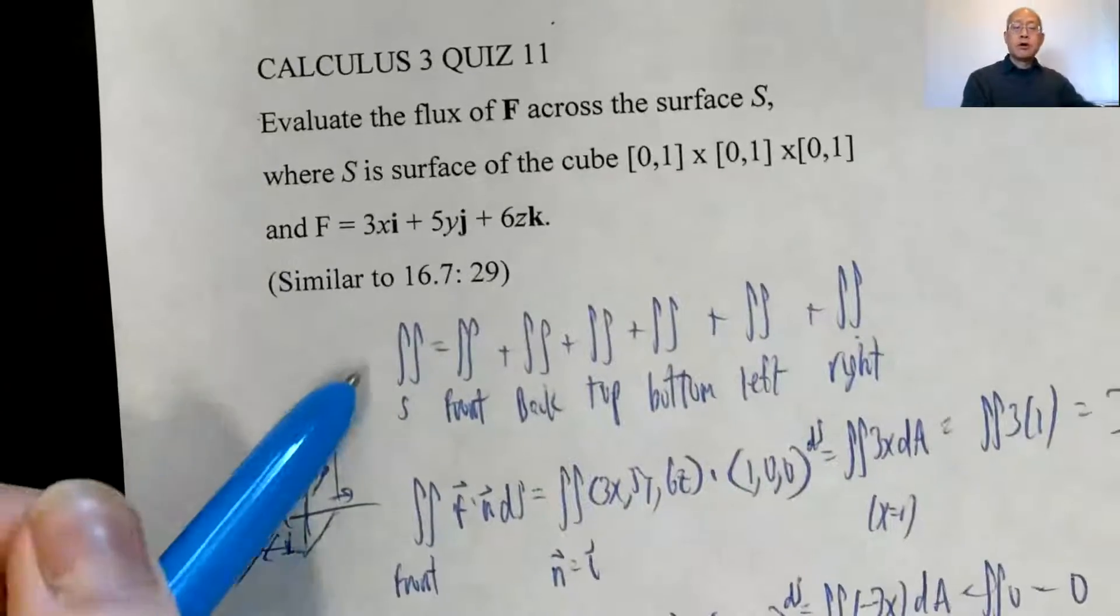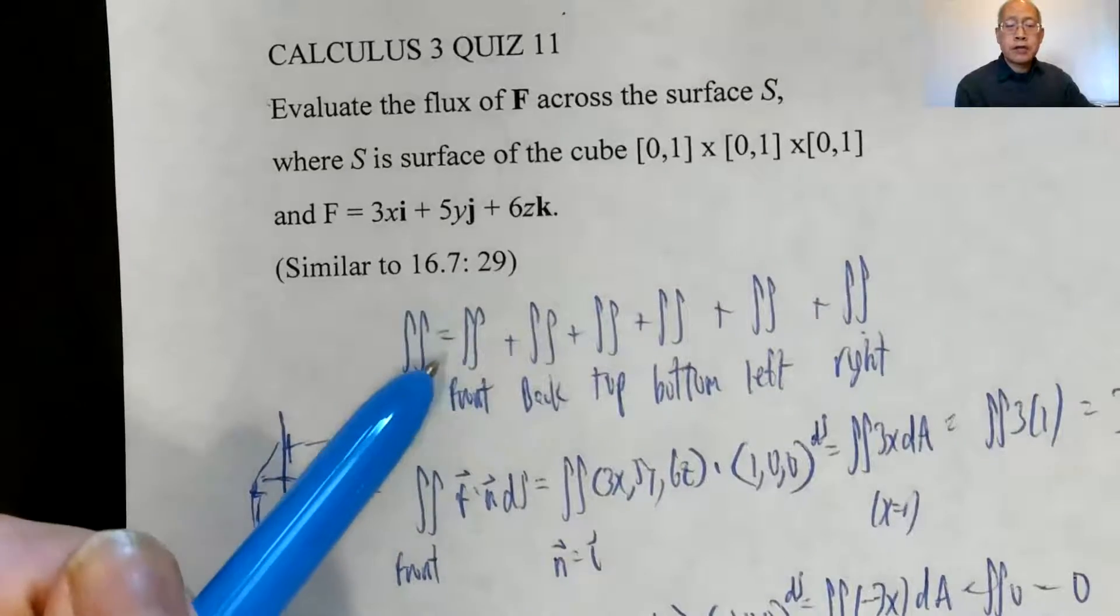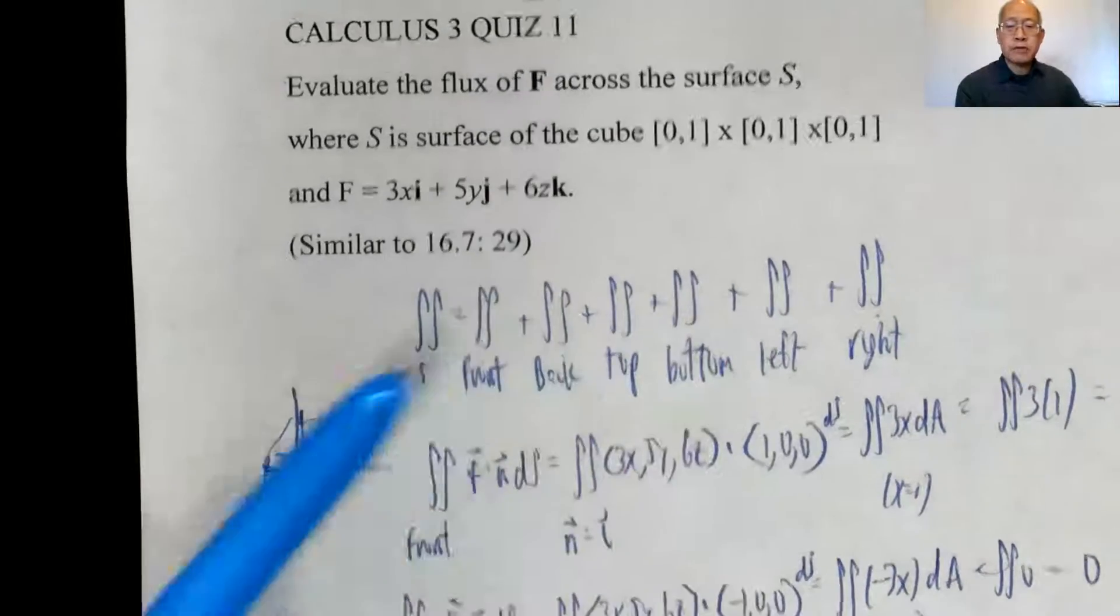So the sum of the flux of F across the entire surface is the flux across the front, back, top, bottom, left, and right.